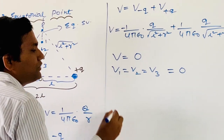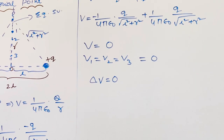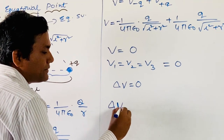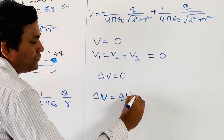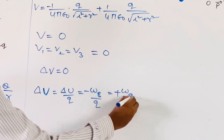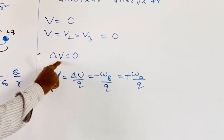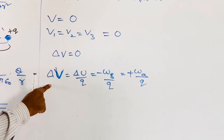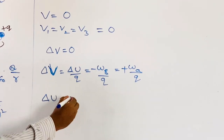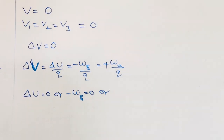Since V = 0, ΔV is also 0. Recall the definition from the last video: ΔV = ΔU/q − W_E/q + W_A/q. For an equipotential surface, ΔV = 0. Substituting, this means ΔU = 0 — the change in electrostatic potential energy is zero. Similarly, the work done by the electrostatic force W_E = 0, and the work done by the applied force W_A = 0 as well.